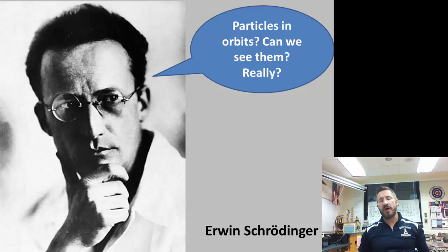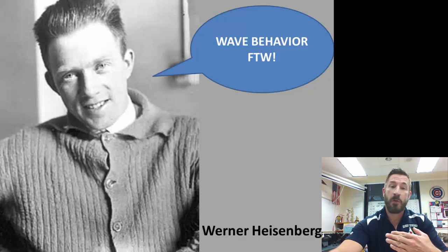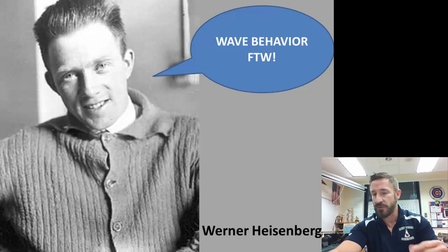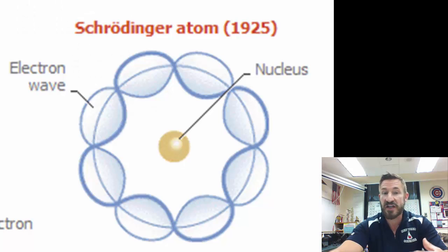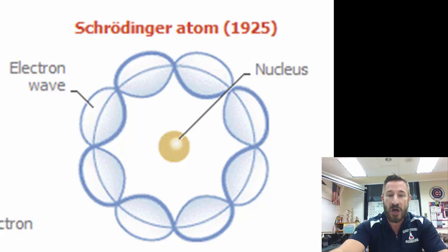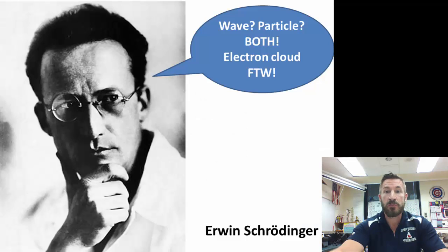Our current vision of the atom is a little bit more complex, and one of the people that talked about that was Erwin Schrödinger. He said particles in orbit - can we really see them? He said there was more of a wave function or a probability of finding those particles, those electrons, in a certain area. Then there came Heisenberg. He said this particle also has properties of a wave, and we call this the Heisenberg Uncertainty Principle. Schrödinger's model, instead of putting electrons in specific orbitals, said there was more of a three-dimensional volume in which they could be found. Schrödinger said it has both properties of a particle and a wave, and he came up with the idea of an electron cloud, which is the idea we have today.